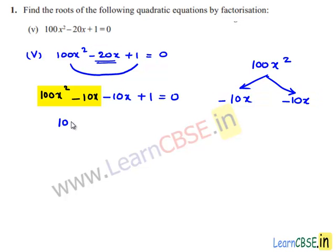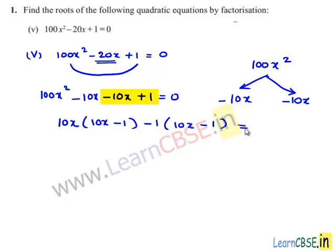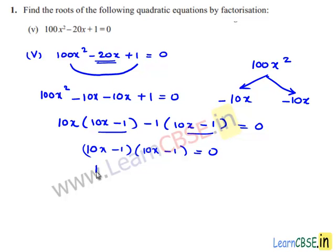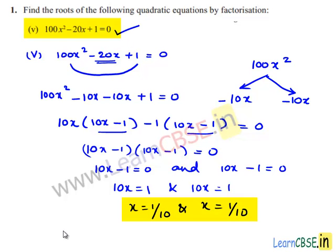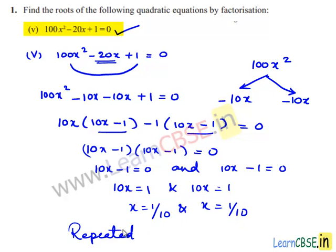Taking 10x as common from the first and second terms gives 10x(10x minus 1), and taking minus 1 as common from the third and fourth terms gives minus 1(10x minus 1). Taking (10x minus 1) as common, the remaining terms give (10x minus 1)(10x minus 1) equals 0. So 10x minus 1 equals 0 twice, giving x equals 1/10 and x equals 1/10. Therefore the given quadratic equation has repeated roots: 1/10 and 1/10.